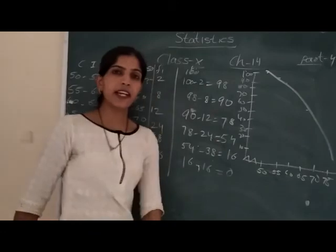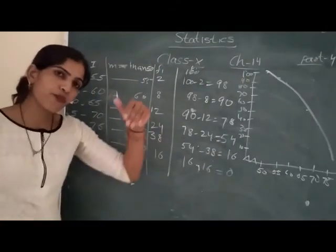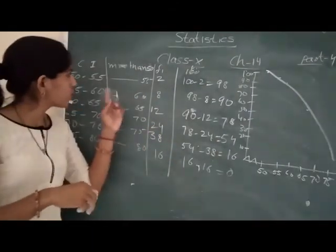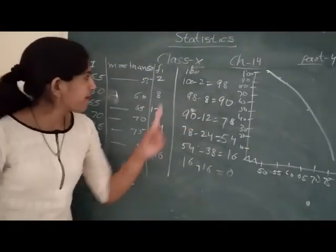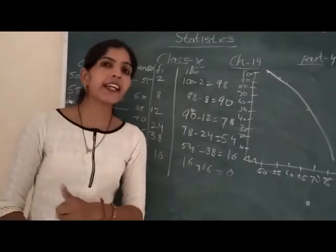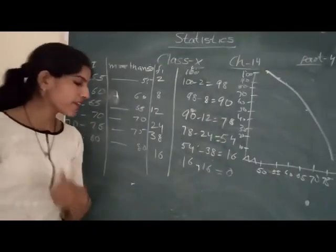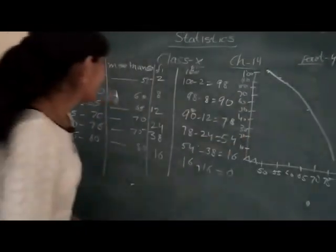This is the curve. In more than you take from the top. In less than you take from bottom going up. In more than you subtract from the total number. In less than you keep adding the numbers going forward. This is the more than and less than frequency curve.